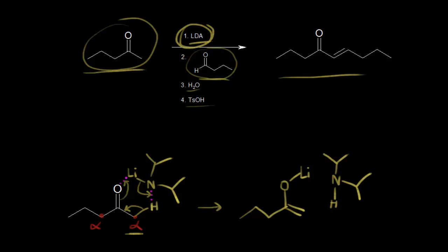Following those electrons: the electrons on the nitrogen anion pick up the proton to form the amine; the electrons in the alpha carbon form the double bond; and the electrons on oxygen move out to bond with lithium, forming our lithium enolate. This is the kinetic enolate — the one formed fastest — and LDA's bulky isopropyl groups prevent deprotonation at the alpha carbon on the left.